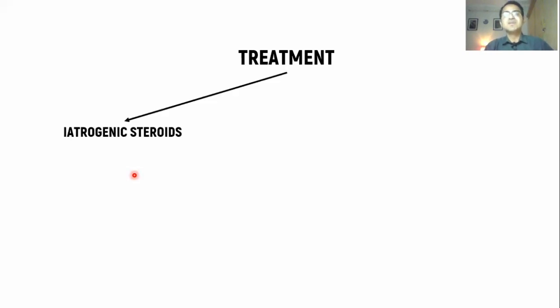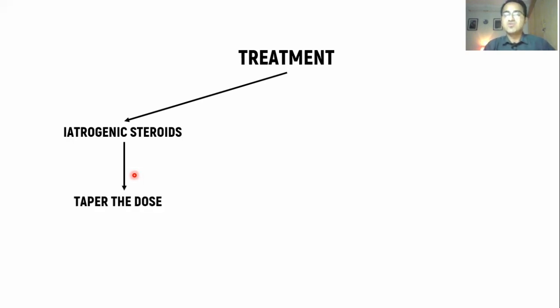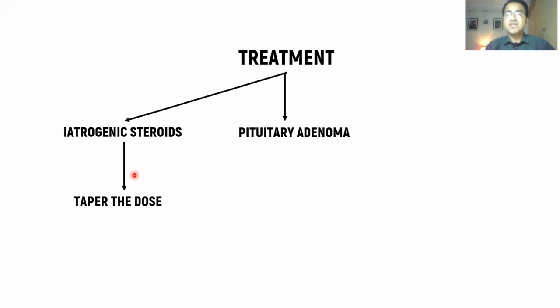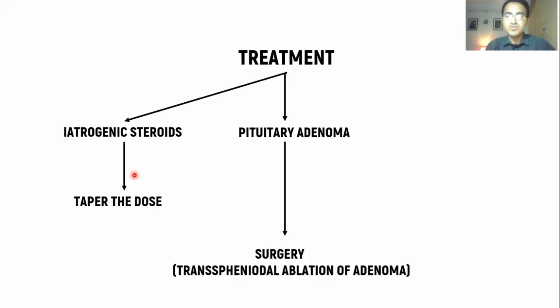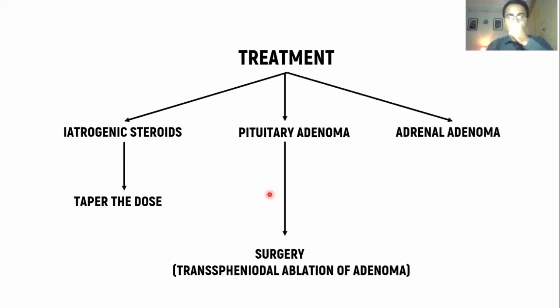Regarding treatment of Cushing syndrome: most often it is iatrogenic steroids causing the syndrome. Patients are taking steroids for autoimmune diseases and those steroids cause Cushing syndrome — the treatment is to taper the dose. If the patient has a pituitary adenoma, it is surgically removed via transsphenoidal ablation. If it is an adrenal adenoma, you also go for surgery.